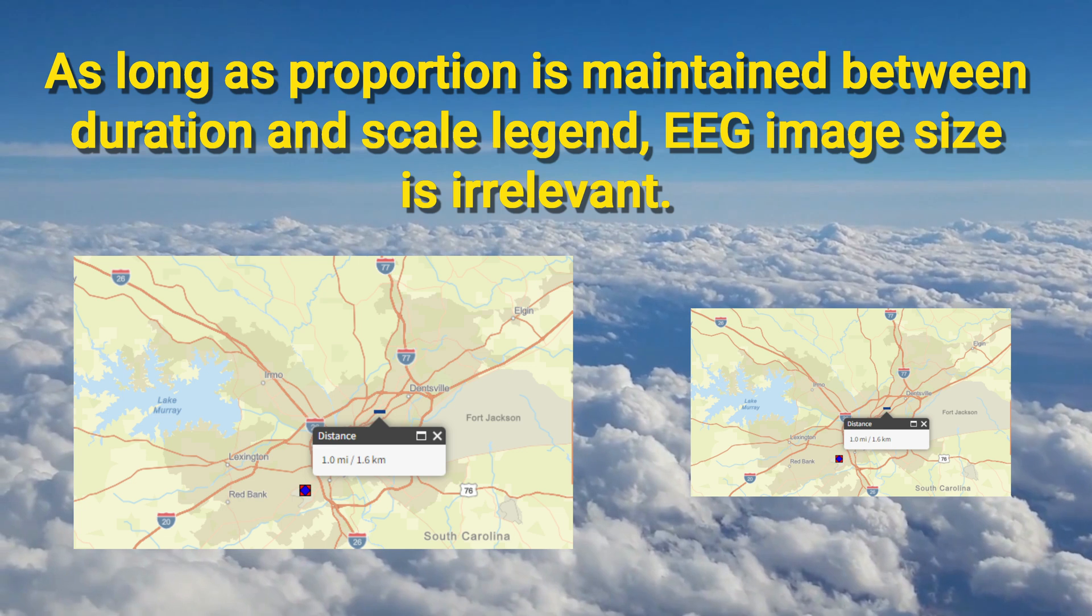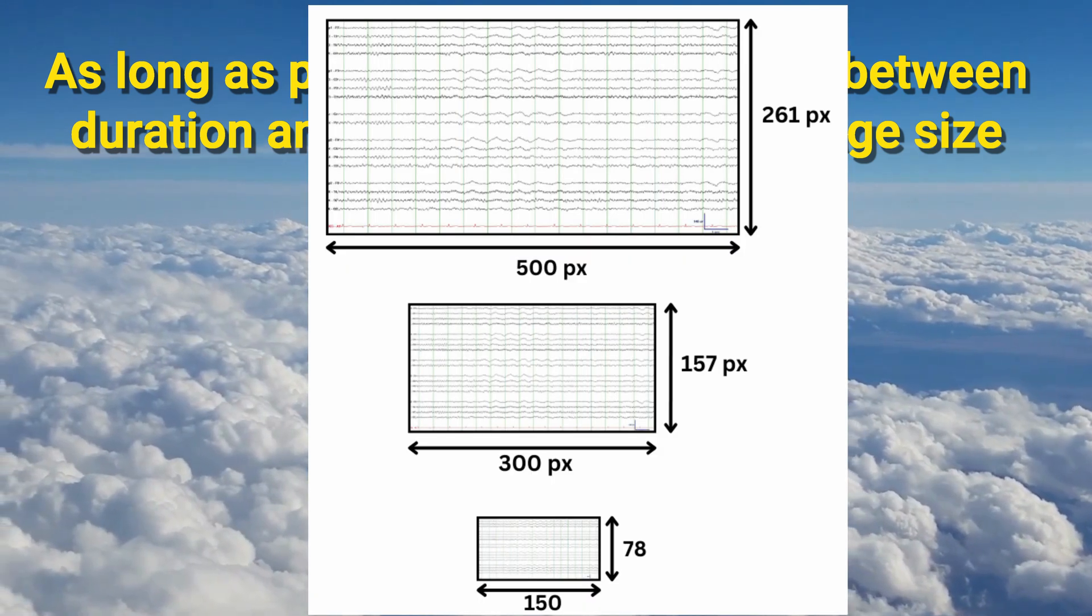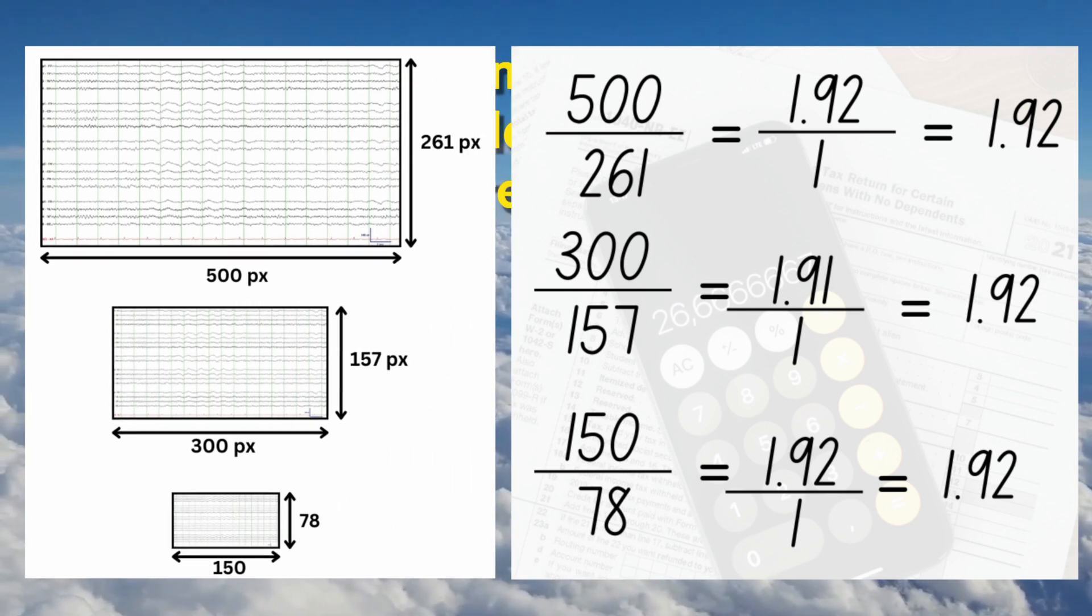An example is a map. So you have a map and you can change the size of that map. As long as the scale legend is there and the height and the width of that image or map or the proportion is maintained, then it doesn't matter if you change the size. Now here's an example of an EEG screenshot which is three sizes.